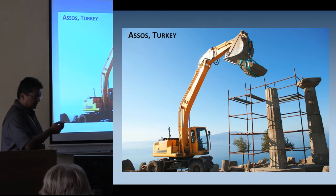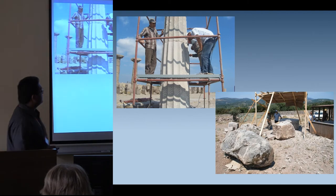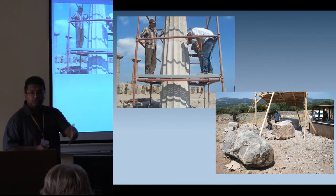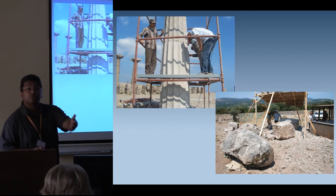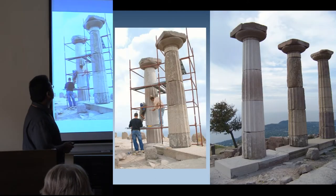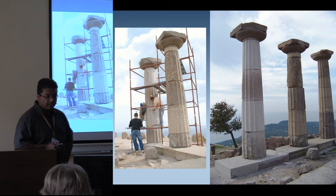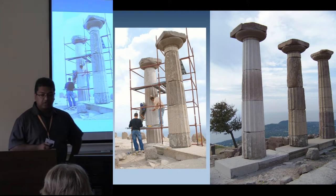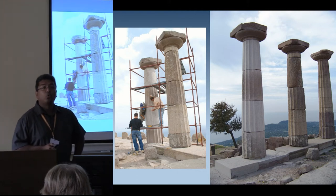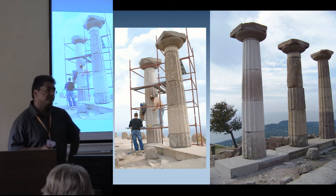These images illustrate the process — local workers, local stone, the actual stone that had been used in the temple originally. By the end of it, we had a reconstructed corner of the temple with about four columns.